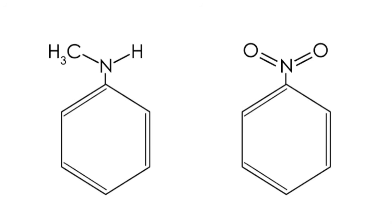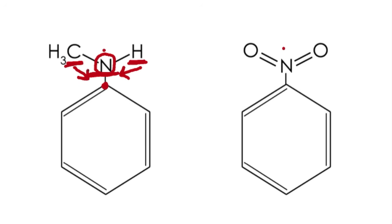To determine whether electrophilic aromatic substitution is ortho-para directing or meta directing, we have to look at the groups directly attached to the benzene ring and determine whether they are electron donating or electron withdrawing groups. Start by looking at the atom directly attached to the benzene ring and comparing it to the atoms attached to it. If the atom attached to the benzene ring is more electronegative than the atoms attached to it, it will shift electrons toward itself, therefore donating electrons into the ring, making this an electron donating group, which will cause ortho-para directing substitution.